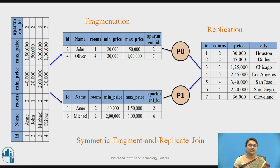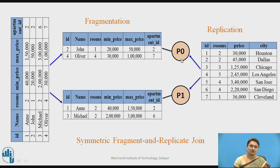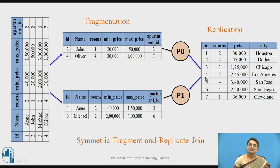This is the asymmetric Fragment and Replicate Join. The person table is divided into two partitions — partition 0 and partition 1. The apartment relation is replicated, so the same copy is given to both P0 and P1. P0 is doing the join operation of partition 0 of person with the replicated apartment data. Similarly, P1 is parallelly doing the join operation of partition 1 of person with the replicated apartment relation.